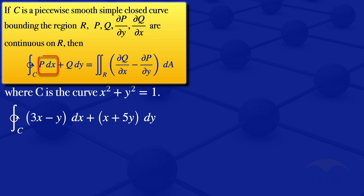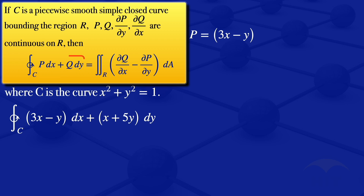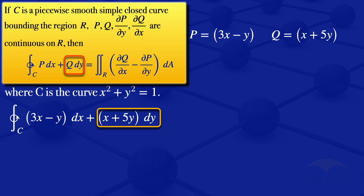So in this case, if we look at the P dx and compare it with the integral that we have, we will see that our P, which is the coefficient of dx, is equals to 3x minus y. Then looking at the coefficient of dy, here it's Q. The coefficient of dy in the integral that we have is x plus 5y, so Q equals x plus 5y.